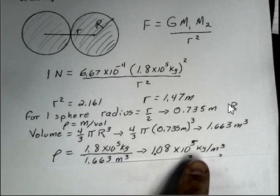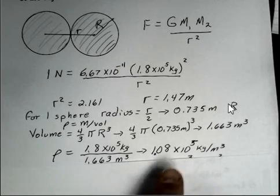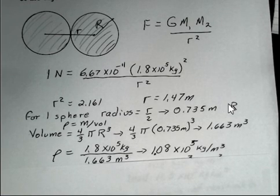And we're still carrying a 10 to the fifth power here, but kind of comparable. 1.08 is 1.8 divided by 1.663. 10 to the fifth kilograms per meter cubed.